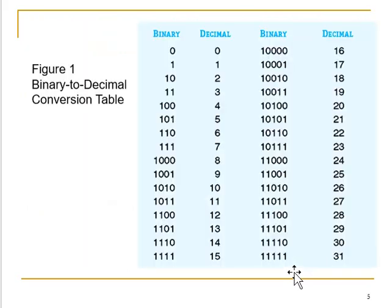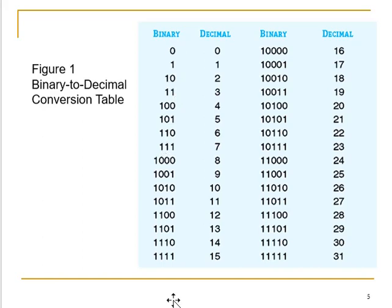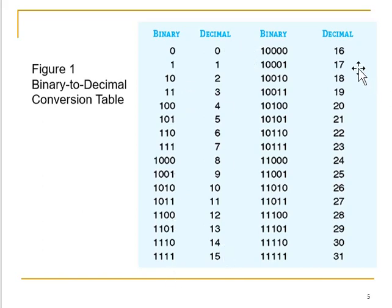Now coming to the binary to decimal conversion table. Here you can see decimal numbers 0 to 15 and 16 to 31, with their equivalent represented in binary on the left-hand side. The representation of the binary number corresponding to decimal 0 and 1 is almost the same as the decimal numbering system, then it varies. If you compare 0 to 15 and 16 to 31, the numbering pattern actually repeats itself.